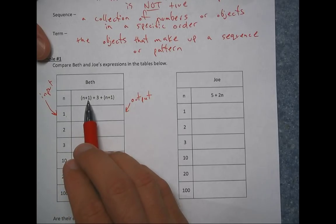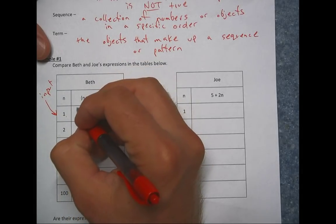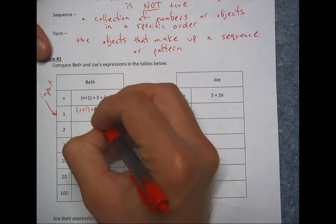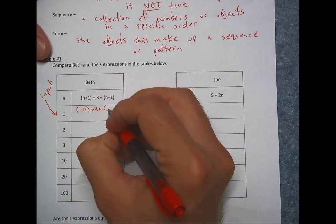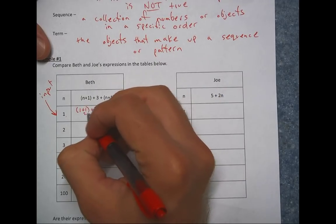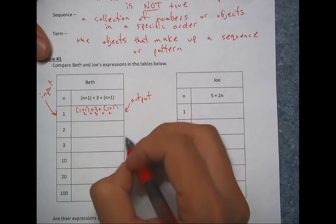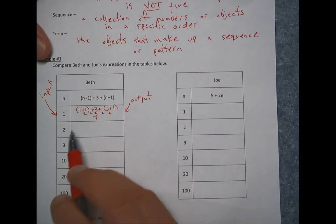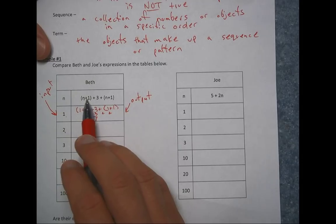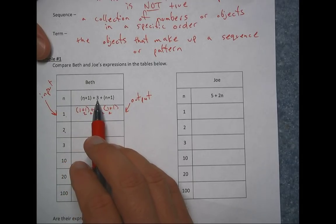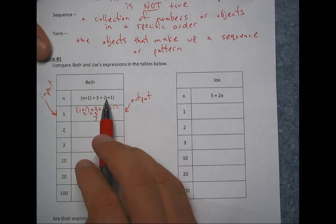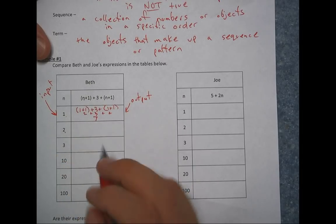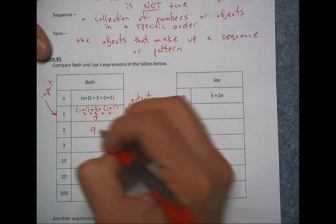So we're going to input the number one. So for the first one, I'm going to show my work. So I'm substituting one in for n. So it becomes one plus one, plus three, and then one plus one. So this is two plus three plus two, for a total of seven. So this one, let's do mentally, you plug this in, two plus one is three, plus three is six. Over here, we have two plus one. So that's also three. So we had six plus three is nine.